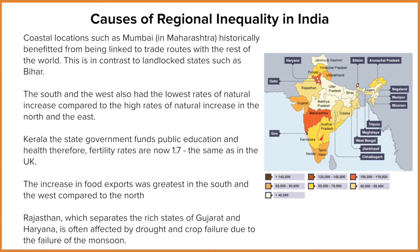Education and reduced fertility rates have allowed Kerala, Goa, and Maharashtra to increase their development. The south and the west are also very fertile regions, and they export a lot of food, which brings in more income as well.